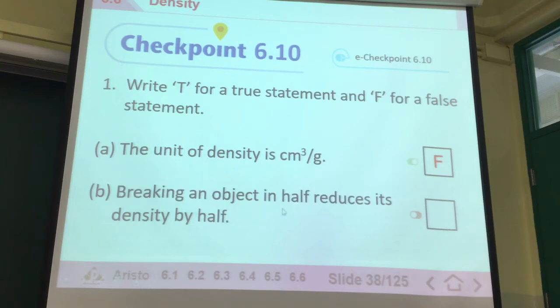The unit of density is cm³ per gram, is it true or false? You should realize the mass should be the first one that comes up, so it's false. It should be gram per cm³. It's not this way around, it's the other way around. Next, dividing an object in half reduces its density by half. Is it true or false? It's false as well. Because the density doesn't change even if you divide it in half. Because if you divide the whole object in half, the mass will divide by half as well.